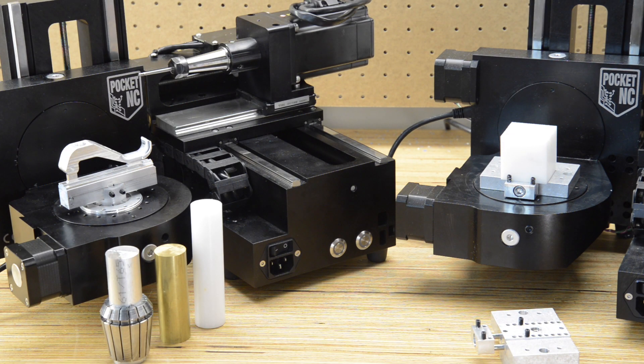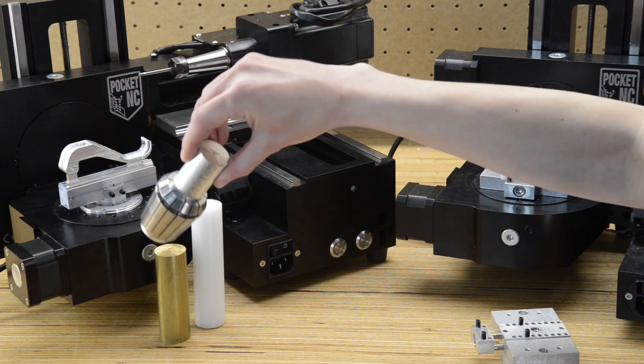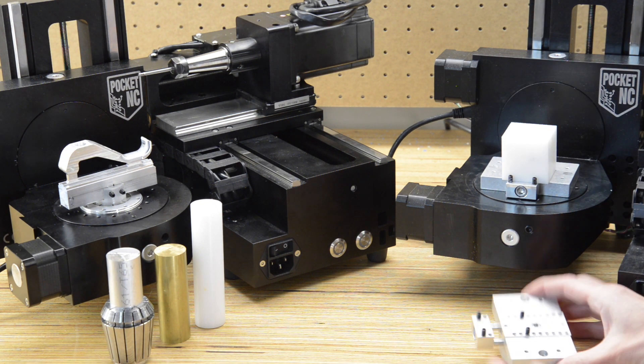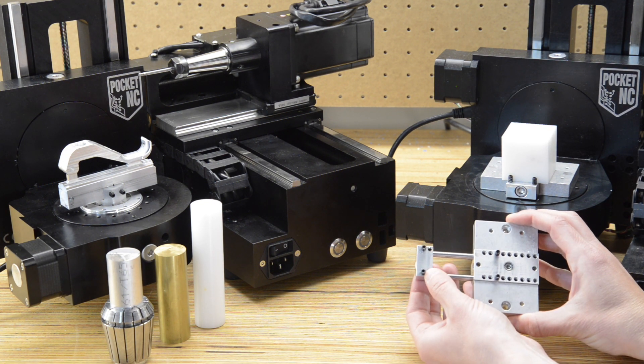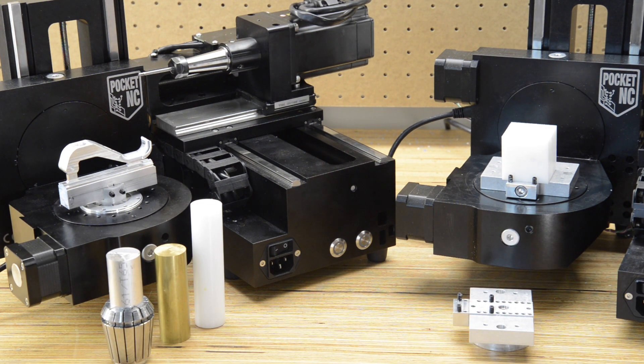Pocket NC offers two workholding options. The ER40 fixture holds round stock one inch in diameter or less, and the custom vice. Many customers devise their own workholding systems since multi-axis parts can have various workholding requirements.